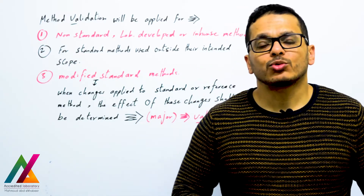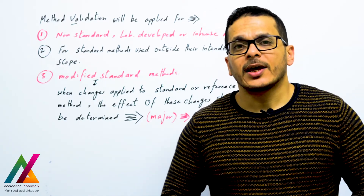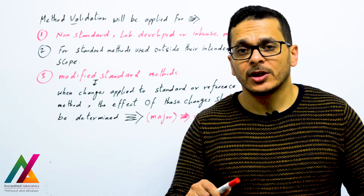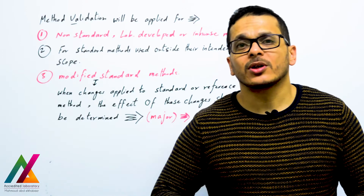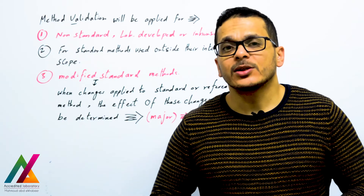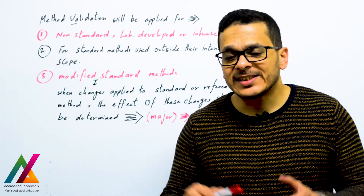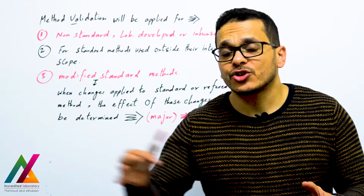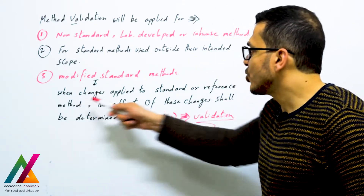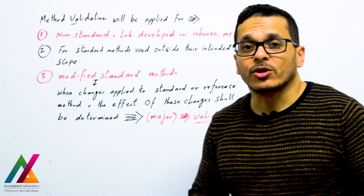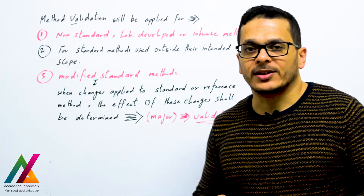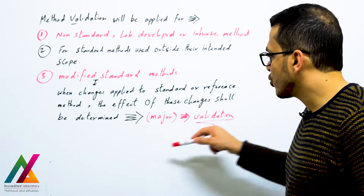If you have a reference method for your target analytes and matrix but find it needs modification to extract your analytes and give more accurate results, you will determine the effect of those changes. If you made a major change, you should perform a full validation. When changes are applied to a standard or reference method, the effect of those changes shall be determined.